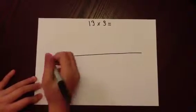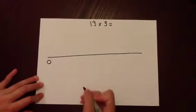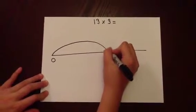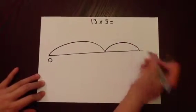So we draw the number line and begin with zero. And mentally we are going to do 10 times by 3, partitioning the 13 into a 10 and a unit.